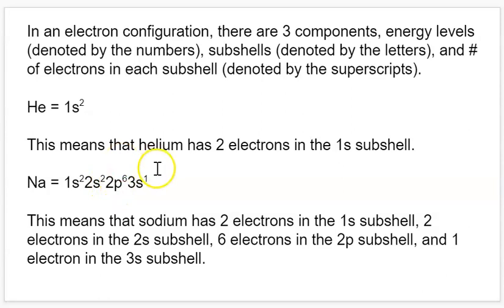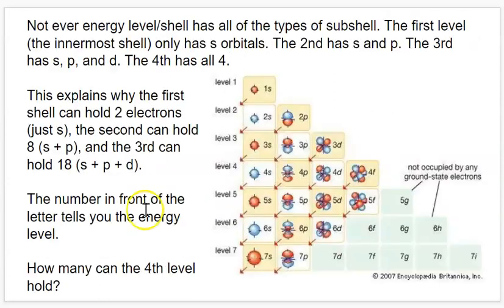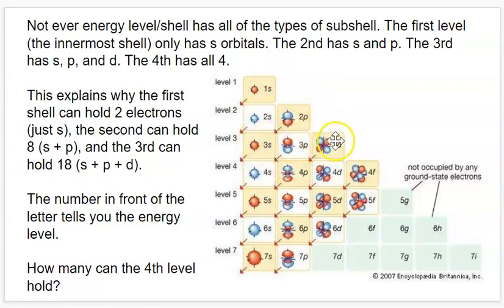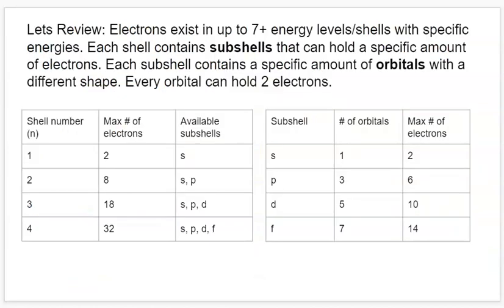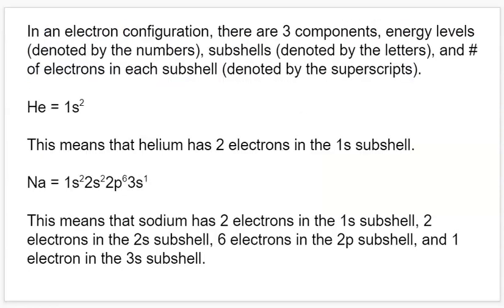That last electron — the single valence electron for sodium — is going to go in the 3S. The S subshell is always the first one to put electrons in. If you follow the arrows on this diagram, it shows you the order that they fill in: we start at 1S, then 2S, then 2P, then 3S, then 3P, then 4S, then 3D. It has kind of an order to it, and I'm going to show you something in a moment that actually helps you know the order just by looking at the periodic table.